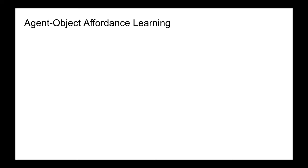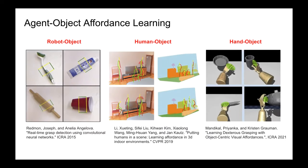Affordance is an important visual quantity to learn for various robotic applications. It equips robots with actionable priors about how to interact with diverse objects and scenes. In computer vision and robotic literature, many papers have investigated how to model, perceive, and understand agent-object interaction.